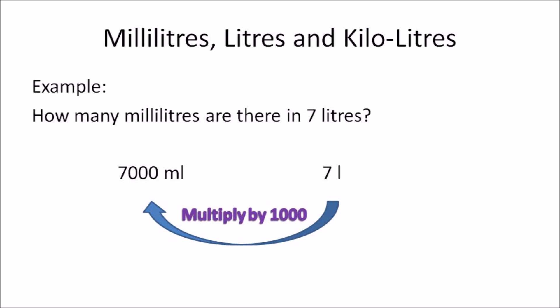Another example: how many milliliters are there in 7 liters? This time you need to convert liters back to milliliters. The order of operation is simple — you multiply by 1000. So 7 liters multiplied by 1000 gives you 7000 milliliters.